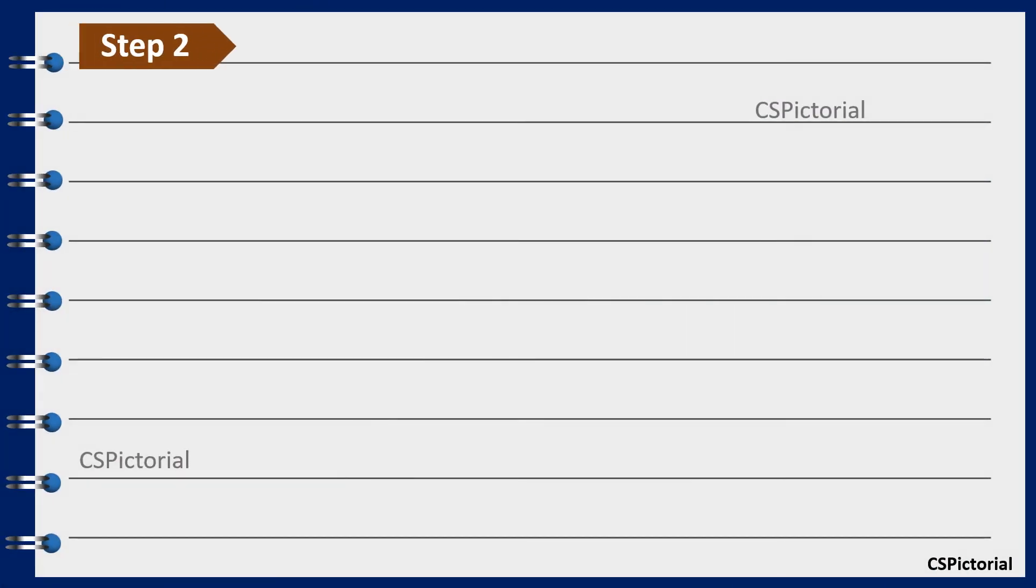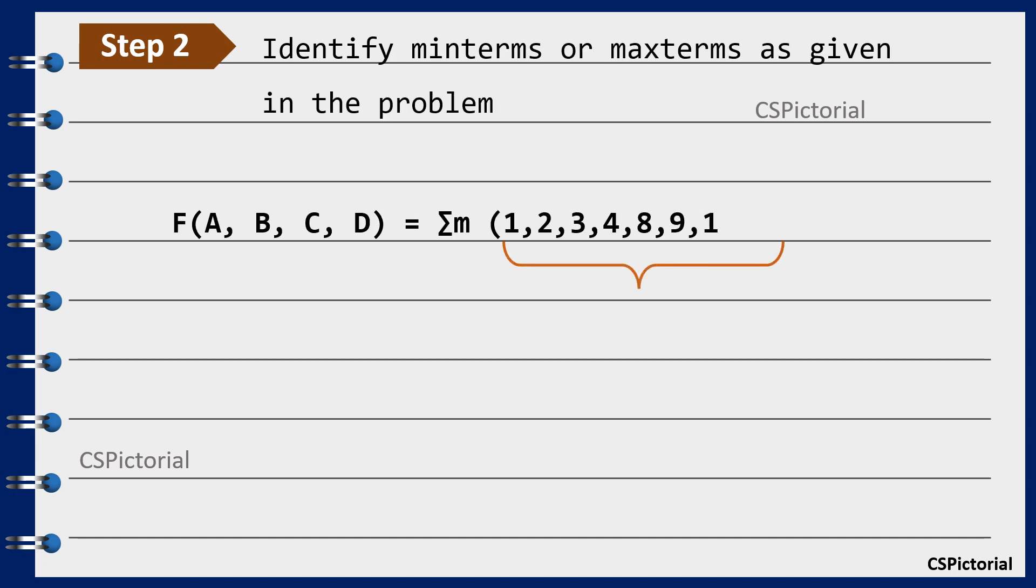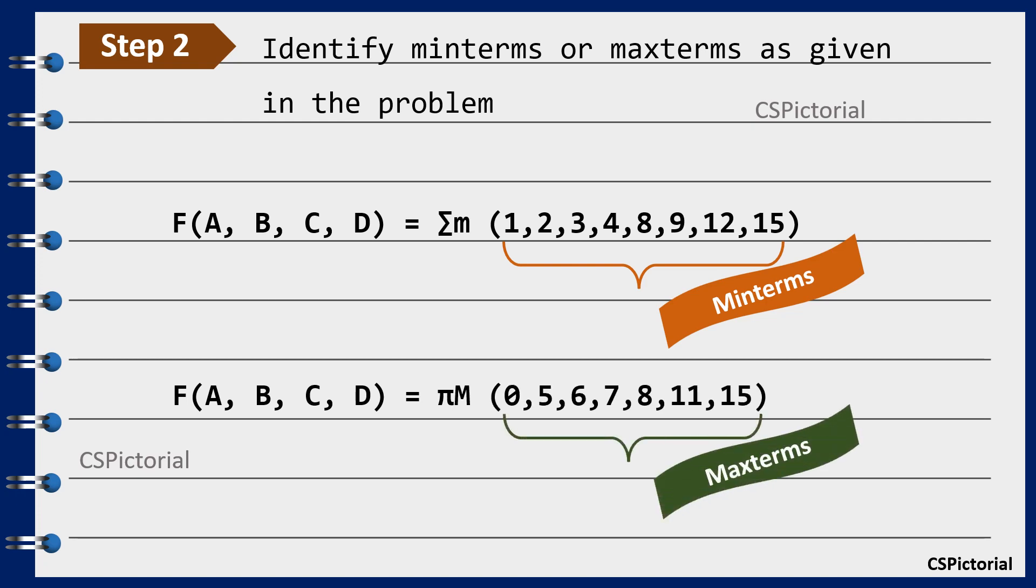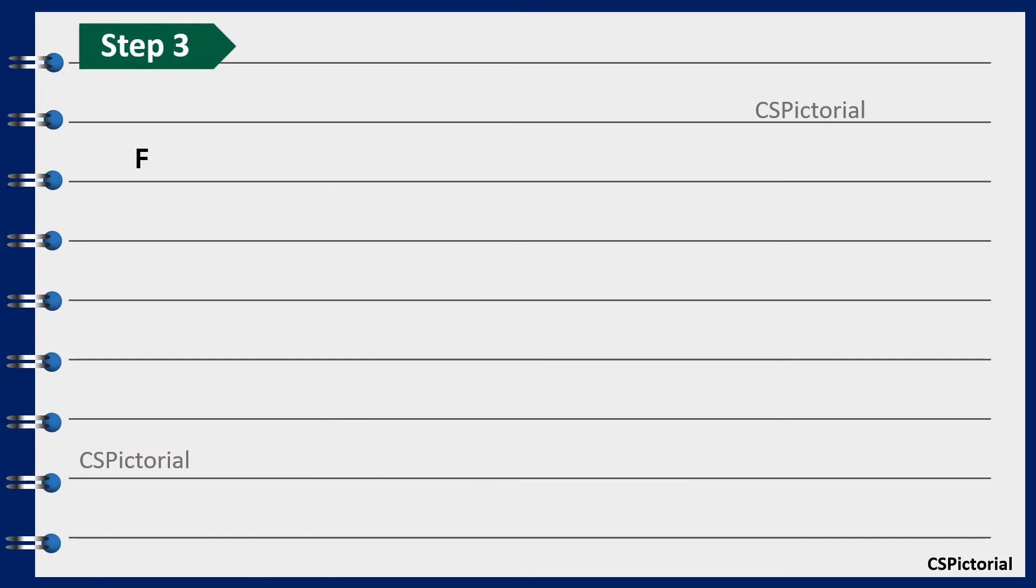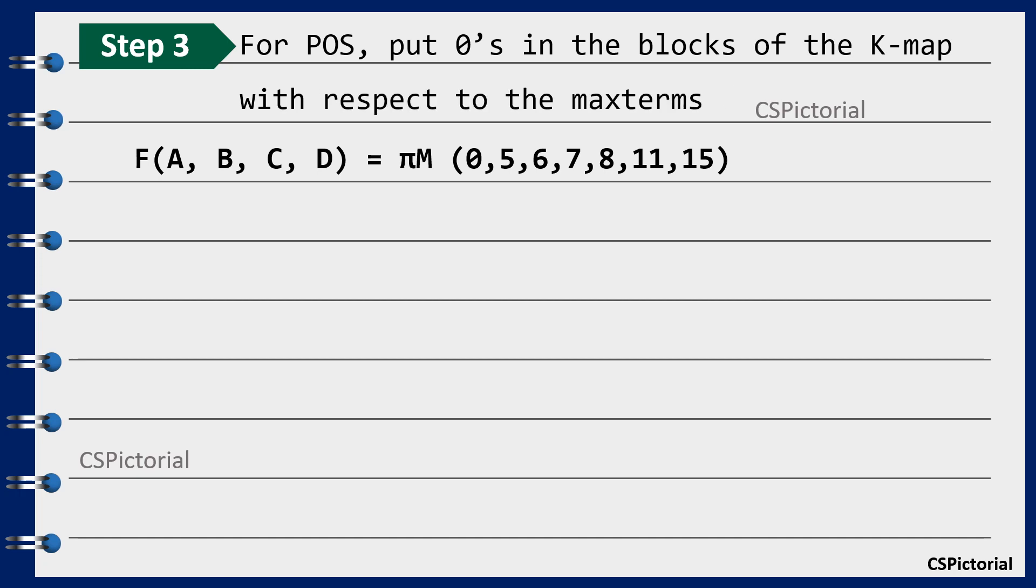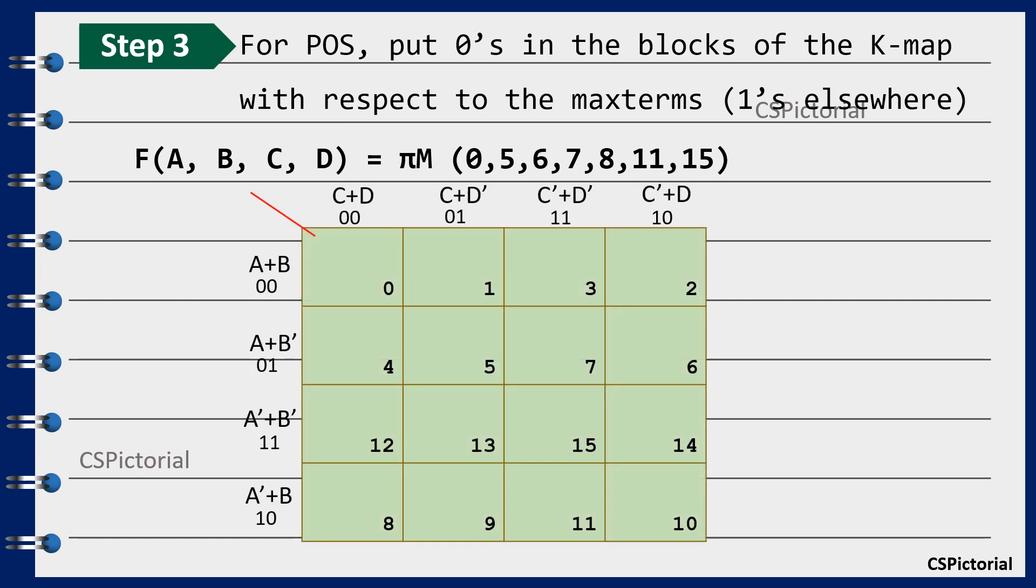Then identify whether the given Boolean function denotes min terms or max terms. When you understand that the given Boolean function has max terms, put zeros in blocks of k-map respective to max terms and place ones in all the other remaining cells. As said already it is always a better practice to first number out the cells as shown here then fill up the cells.